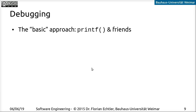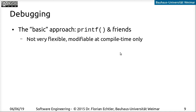Let's talk about debugging. The basic solution, which probably everybody has used at some point, is to use something like printf or println and related methods to output textual debug information on the terminal. This is a very simple approach, but also a very simplistic one. The biggest drawback is that it's not flexible.